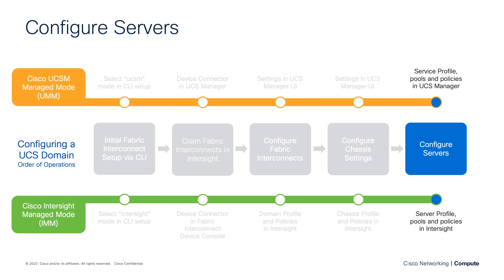Finally, we can now configure our servers. From a UMM perspective, server configuration is accomplished by creating a service profile and a set of service profile policies within UCS Manager and assigning that service profile to a physical server. Similarly, with an IMM domain, you create a server profile and a set of server profile policies within Intersight. The concept between the two is very much the same; however, some of the policies and terms have different names between UMM and IMM. There is some learning curve when going from UMM to IMM, and that's really what this video series is all about.